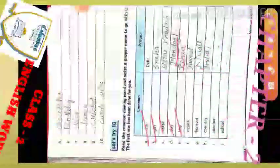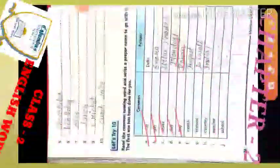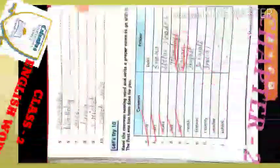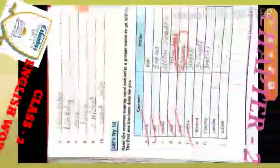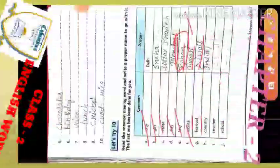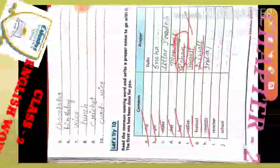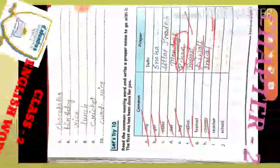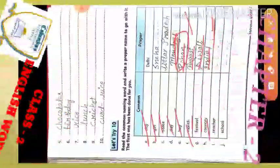For 'boy,' you can write any boy's name — your own name, your brother's name, or anyone's name, but it should be a specific boy's name. For 'month,' I have written August because this month is running, but you can write any other month. For 'festival,' like Diwali — if you want to keep any other festival, you can. For 'country,' I have written India, but you can also write China or any other country you like.